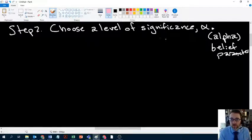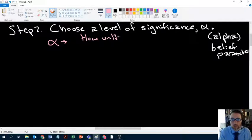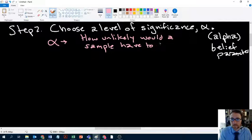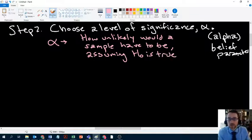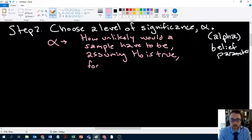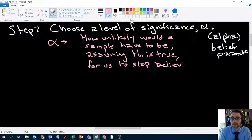Anyway, I've stated in the past that every number is the answer to a question. I want to point out in this case, alpha is the answer to the following question: how unlikely would a sample have to be, assuming H0 is true, for us to stop believing that H0 is true?